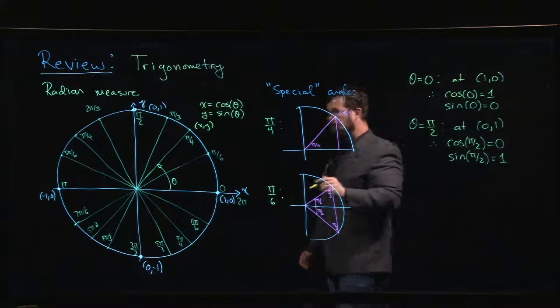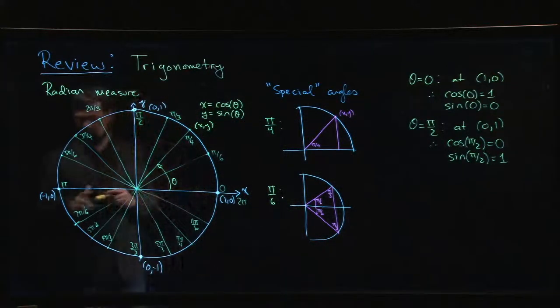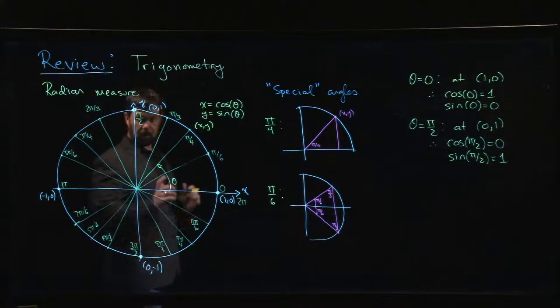And similarly, the other four intercepts, you can read off the answer. Cosine of pi is minus 1, sine of pi is 0, cosine of 3 pi over 2 is 0, sine of 3 pi over 2 is negative 1.